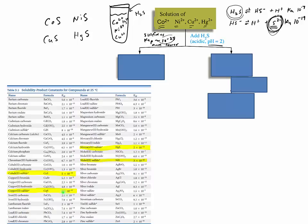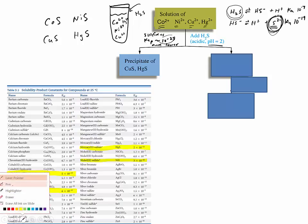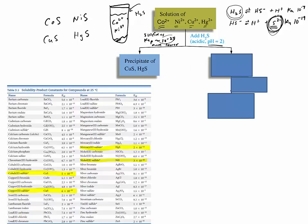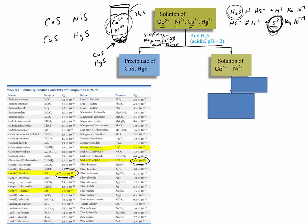So copper and mercury will fall out. In our picture, mercury and copper sulfide will precipitate down into the muck at the bottom. Cobalt and nickel remain in solution because we don't have enough sulfide ions to get those to precipitate yet. Nickel is 10⁻²⁰ and cobalt is 10⁻²², so these will still be remaining in solution.